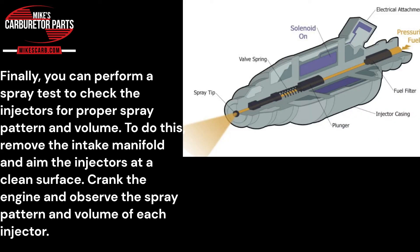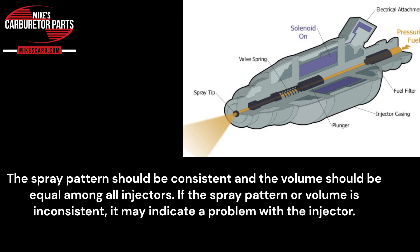Finally, you can perform a spray test to check the injectors for proper spray pattern and volume. To do this, remove the intake manifold and aim the injectors at a clean surface. Crank the engine and observe the spray pattern and volume for each injector. The spray pattern should be consistent and the volume should be equal among all injectors. If the spray pattern or volume is inconsistent, it may indicate a problem with the injector.